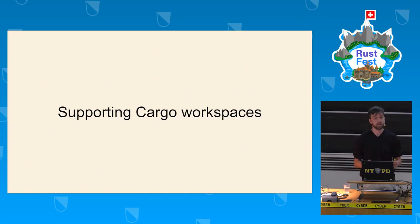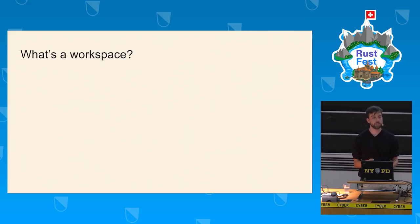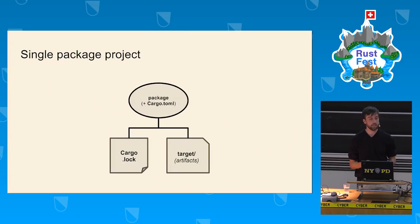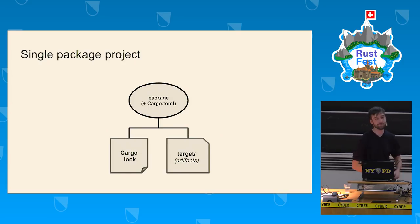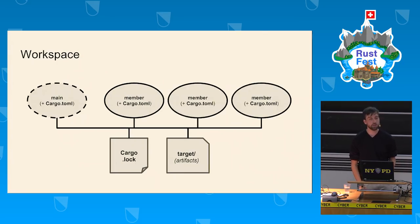Let's talk about supporting cargo workspaces. First, what is a workspace? By default, `cargo new` creates a single-package project with a Cargo.lock file containing the resolved dependencies, a target directory for build artifacts, and a Cargo.toml manifest. Workspaces differ in that we still have the same lock file and target directory, but the main package is optional and we can explicitly specify all member packages inside the project.